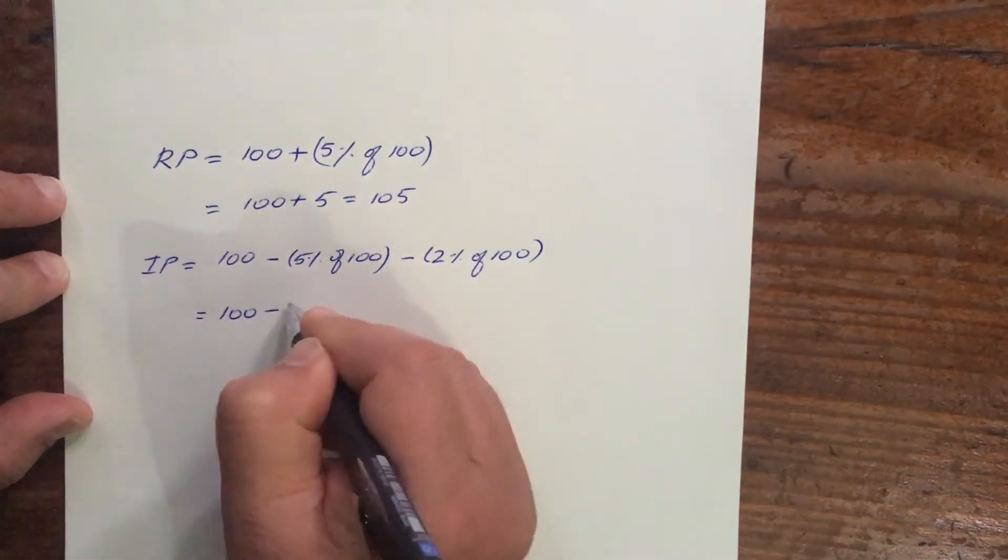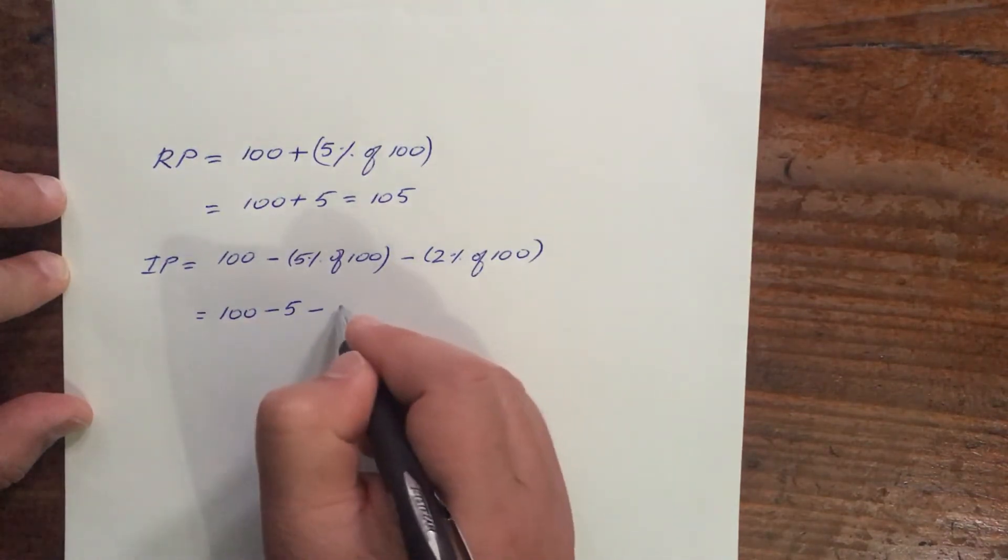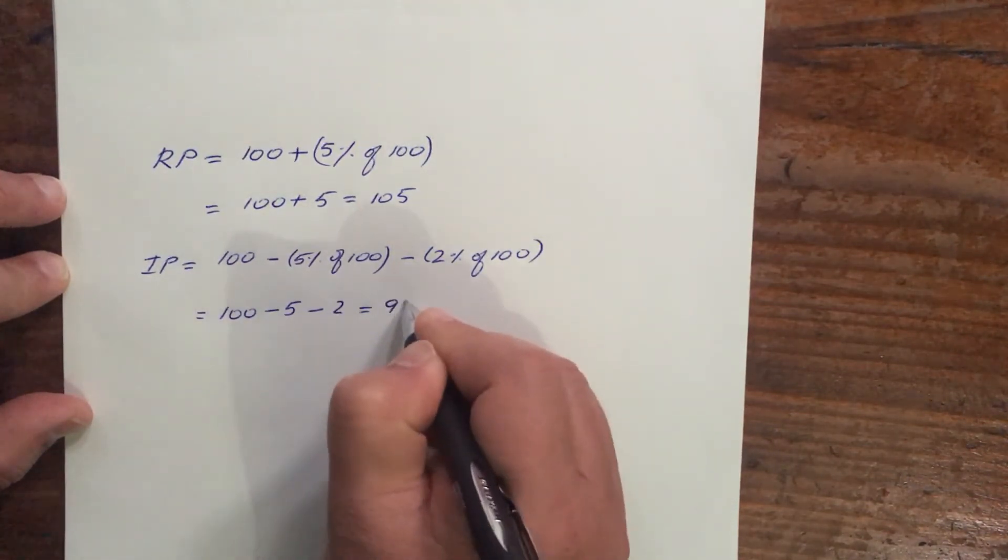So that is 100 minus 5. 100 minus 5 is 95 and 95 minus 2 is equal to 93. So your net issue price is 93.